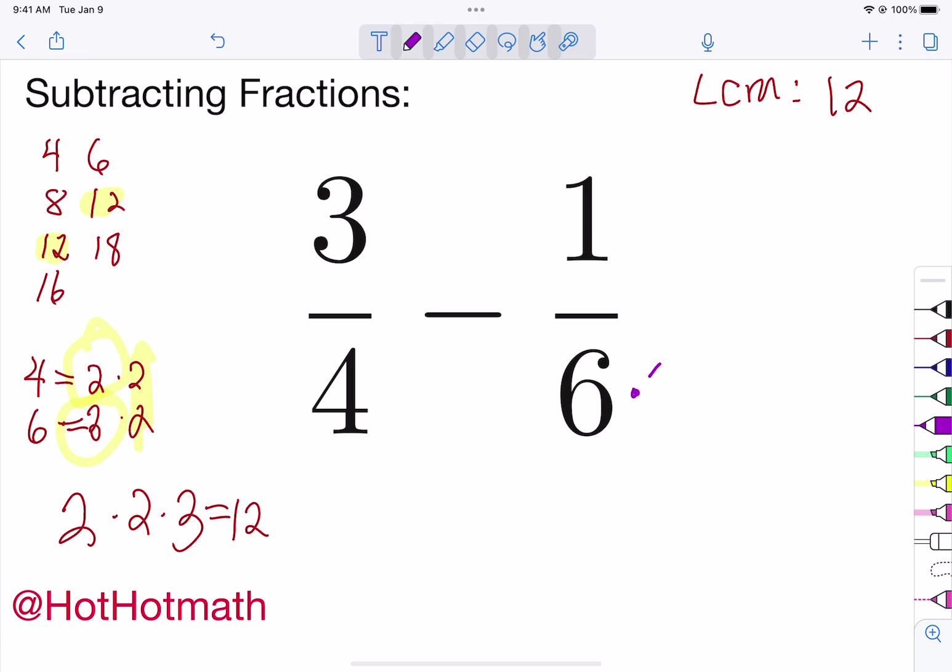So let's look. How could we change that to a twelve? Well, I need to multiply a six by two and whatever I multiply on the top, that little dot means multiplication. Whatever I multiply on the top, I'm also going to multiply on the bottom.